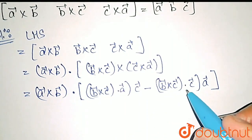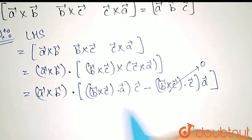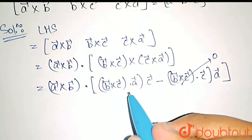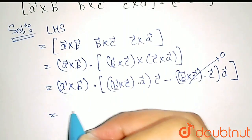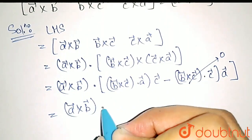This expression is 0 because B cross C dot C is 0. So we are only left with this. So again, the LHS turns out to be A cross B dot - this is scalar triple product of A, B and C.